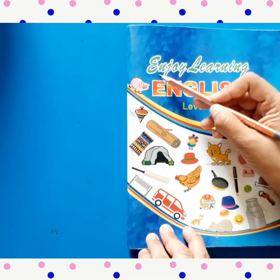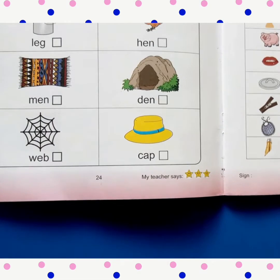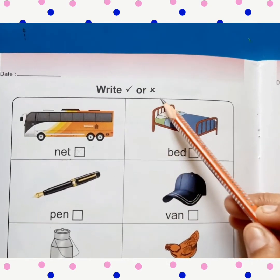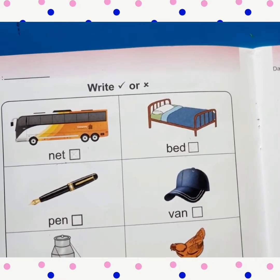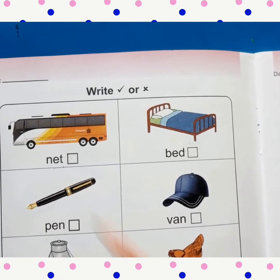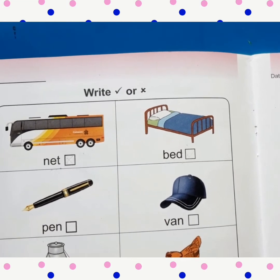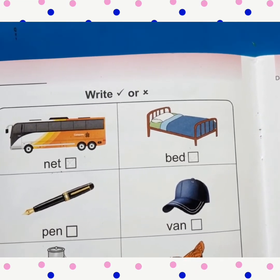Kids, in your E-L e-book open page number 24. And on this page, we have one exercise. Write, tick or cross. So kids, what we have to do here? We have to put a tick when the spelling matches with the picture. And when spelling does not match with the picture, we will put cross.